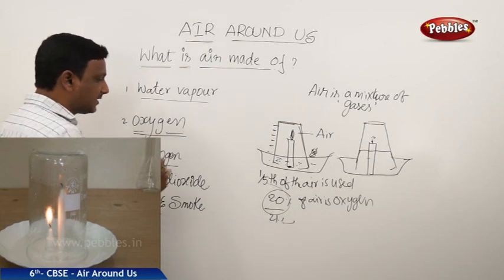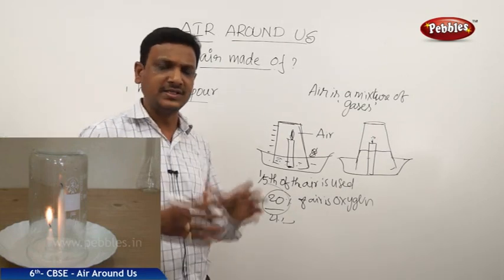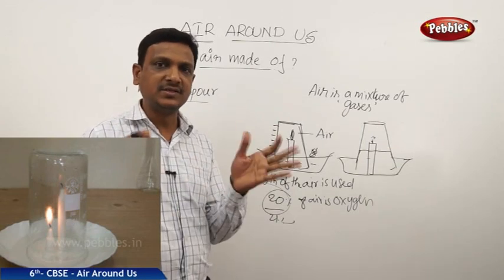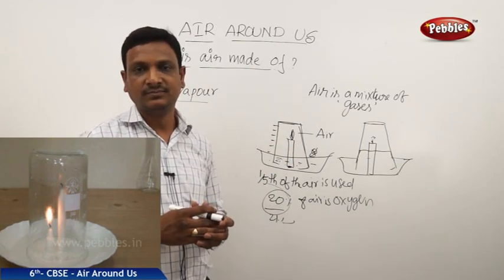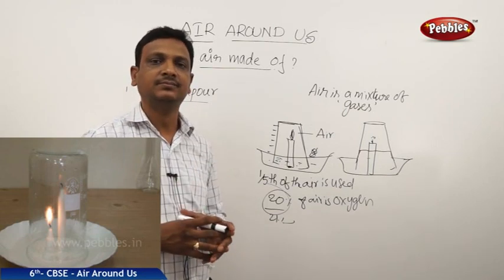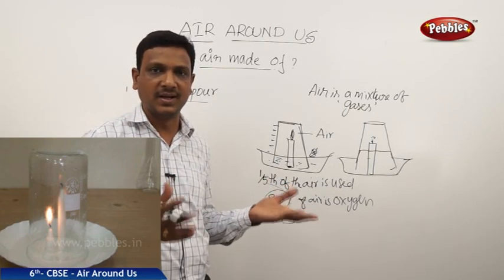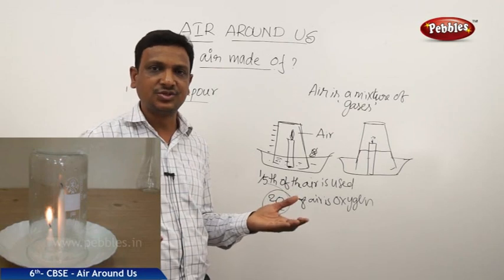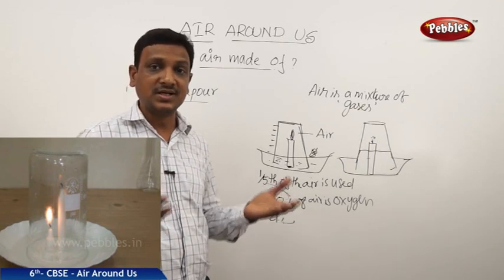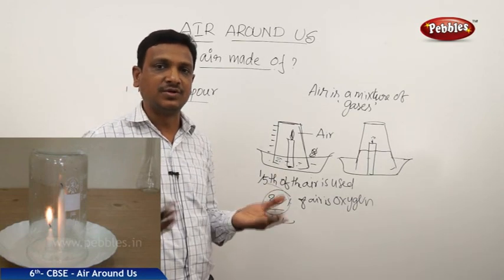The third component is nitrogen. Air also consists of nitrogen — it is the major part of the air, about 70% of the air is nitrogen. Nitrogen does not support burning; it is an inert one with no connection to burning. It does not stop burning, it simply does not allow it. Nitrogen is the major part of the air.